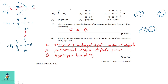Looking at propanone: the C=O carbonyl group is polar — the carbon is partially positive and the oxygen is partially negative. Combining two molecules of propanone, the negative oxygen feels a force of attraction with the positive carbon. This is not an actual bond, but a force of attraction between the molecules.